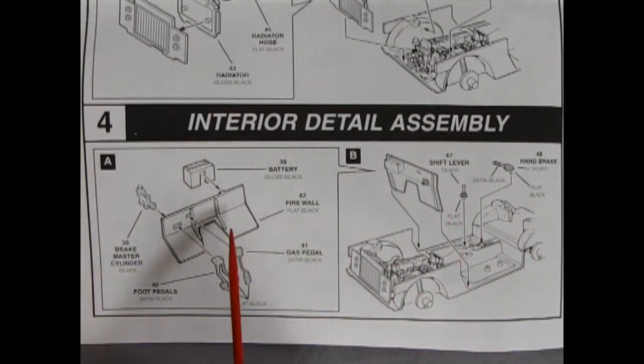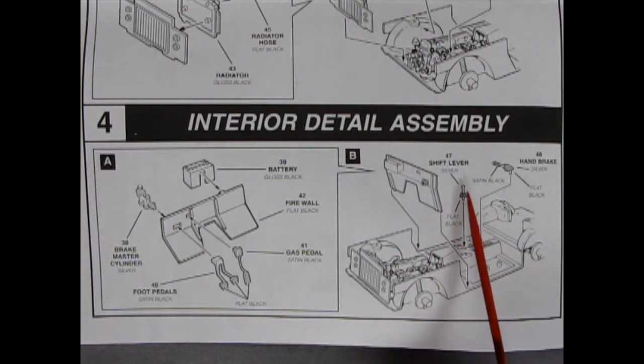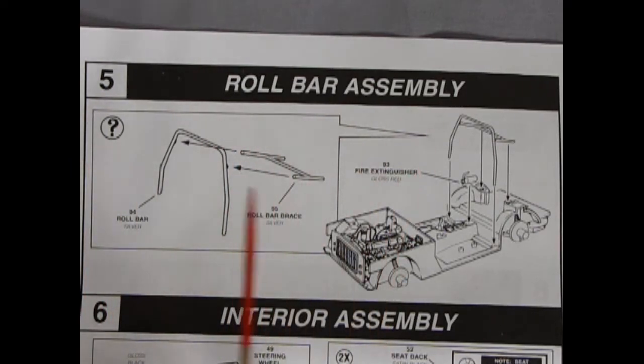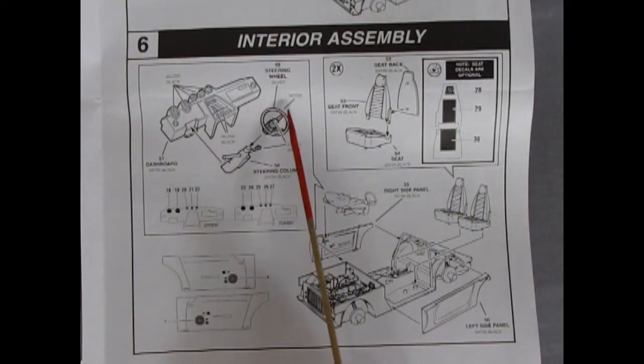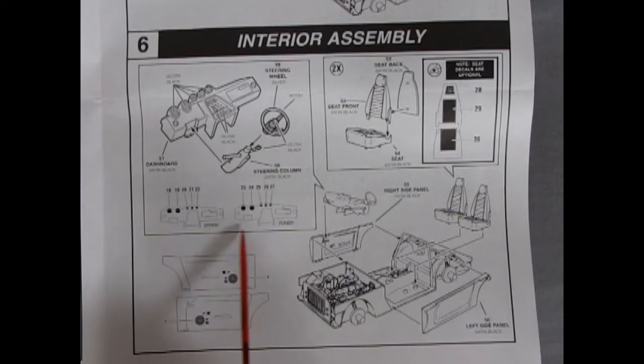Panel four is our interior detail assembly. Here we have the firewall with the battery gluing into it, brake master cylinder, and foot pedals: a gas pedal and two separate pedals for the clutch and brake. The firewall will drop in behind here. We've got our shift lever dropping into the floor as well as the hand brake, which is always nice. Step five shows our roll bar assembly. You get a two-piece roll bar with the bigger part and then the braces going back which glue into the back of our car. There's a fire extinguisher that pops onto that center console. In panel six, we get more of the interior assembly. Here we have our dashboard with the steering column and the steering wheel which has a wood-grained ring on it.